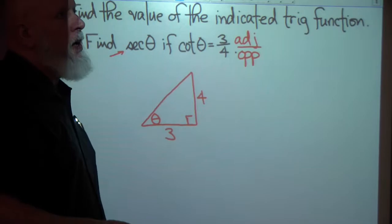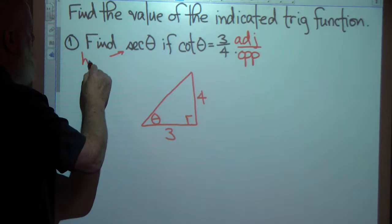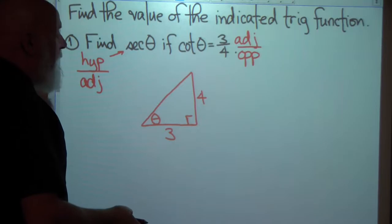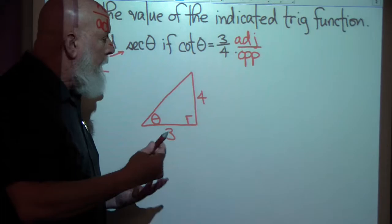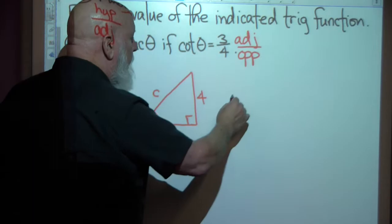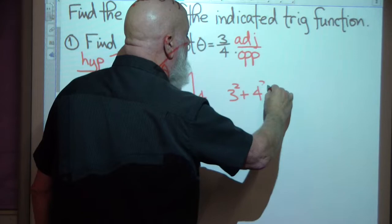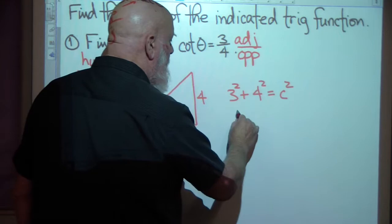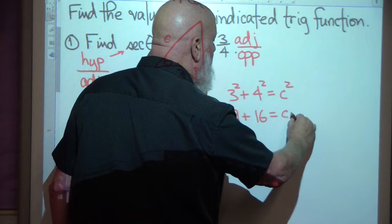Well, what's the secant of theta? That's the inverse of cosine. Cosine is adjacent over hypotenuse, so secant would be hypotenuse over adjacent. In order to find the hypotenuse over the adjacent, I have to find the hypotenuse. So I'm going to use the Pythagorean theorem. You can tell at a glance it's going to be 5, but in case you can't — we'll call it C — a squared plus b squared equals c squared. This is 9 plus 16 equals c squared.